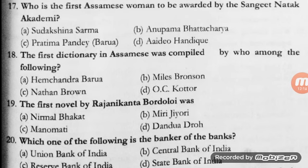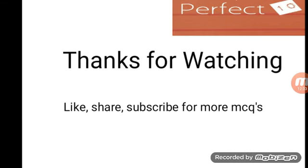Question number 20, the last question: which one of the following is the banker of the banks? Options: Union Bank of India, Central Bank of India, Reserve Bank of India, State Bank of India. The correct answer is C — Reserve Bank of India. So friends, these are the questions and solved answers for today.